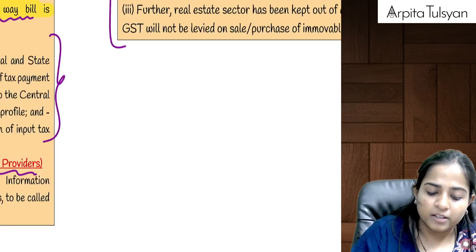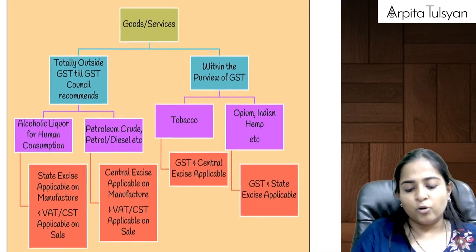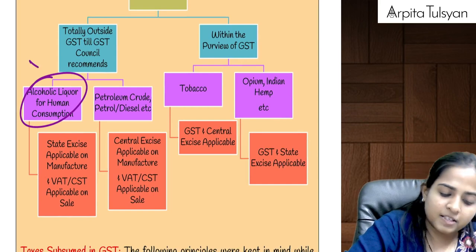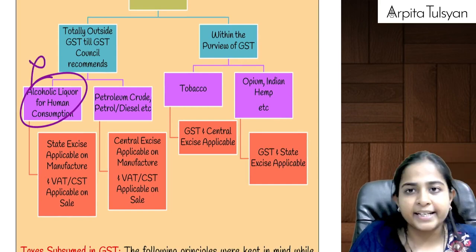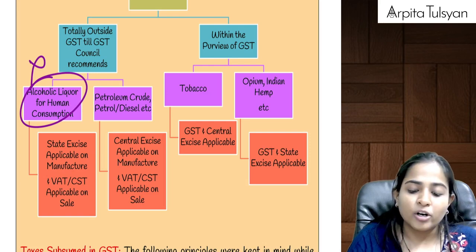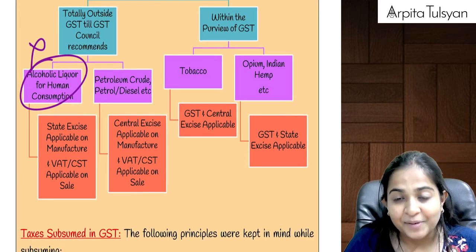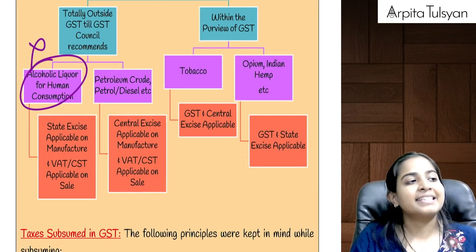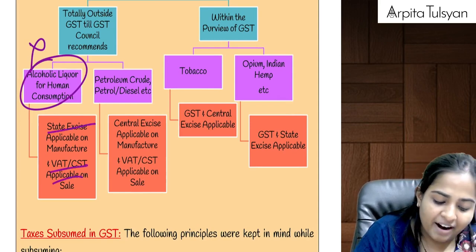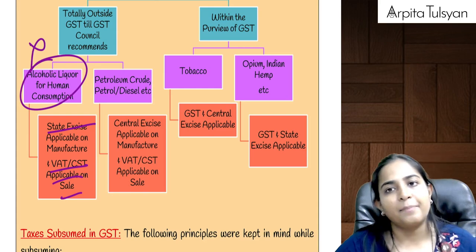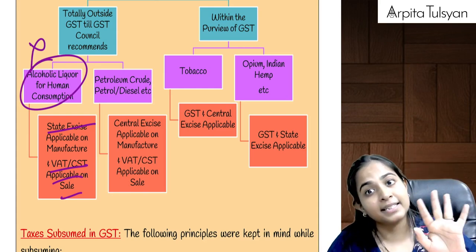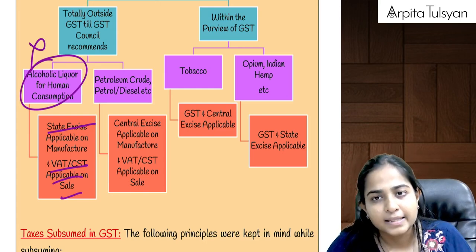GST on certain products: Alcoholic liquor for human consumption is totally outside GST. That does not mean no tax is applicable — on its manufacturing, state excise duty is applicable, and on its sale, VAT or CST is applicable. So for alcoholic liquor for human consumption, we are still under the old system.